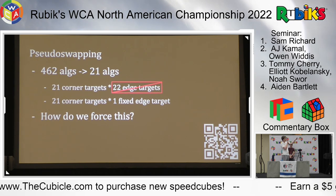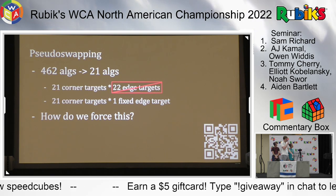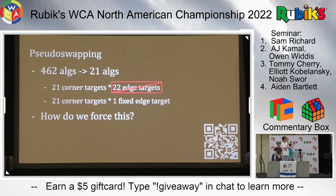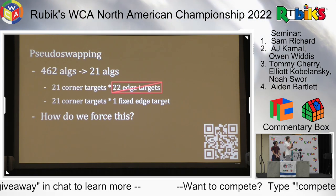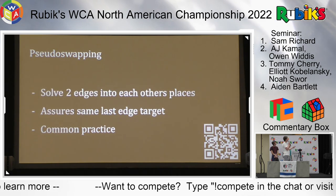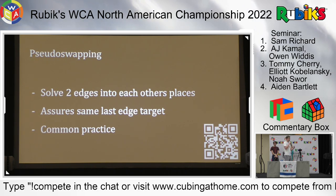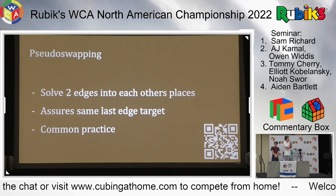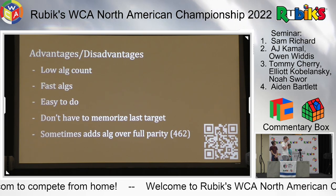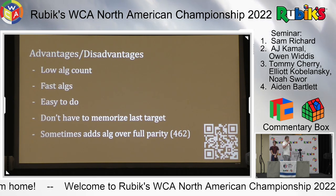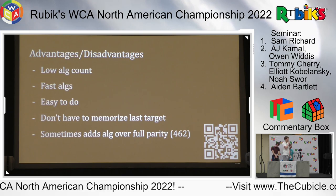What pseudoswapping does is always fix the last edge target to be the same thing. This reduces 21 times 22 into 21 times 1 - quite a significant reduction. For floating, it brings the number down to about 80 algorithms, and all those algorithms are really good. How we force this: we solve two edges into each other's places, which always ensures the same last edge target when done properly. This is common practice among people using three-style. The advantage is very low algorithm count - 21 for fixed buffers - and many fast algorithms are setups to PLLs or to each other.